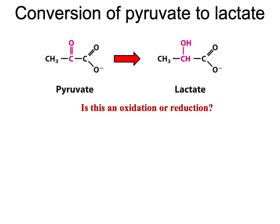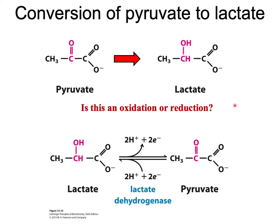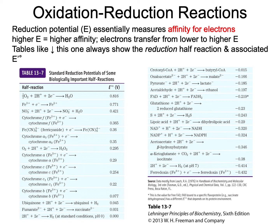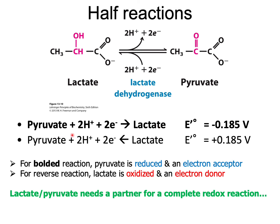Let us consider the conversion of pyruvate to lactate. Is this an oxidation or reduction? A quick look says that pyruvate is getting reduced to lactate, and lactate is getting oxidized to pyruvate by the enzyme lactate dehydrogenase. Looking at the half reactions: pyruvate going to lactate has an E0 of minus 0.185 volts, whereas lactate going to pyruvate, the reverse reaction, has an E0 of plus 0.185 volts.